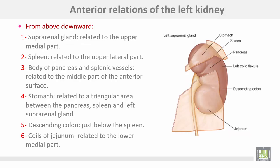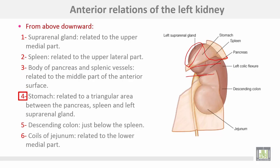The anterior relations of the left kidney from above downwards: the suprarenal gland related to the upper medial part; the spleen related to the upper lateral part; the body of the pancreas and the splenic vessels related to the middle part of the anterior surface; the stomach related to the triangle between the three S's — suprarenal, spleen, and pancreas with splenic vessels; the descending colon just below the spleen; and coils of jejunum related to the lower medial part.